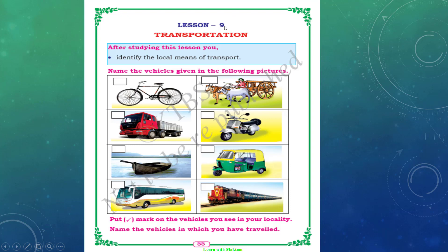Lesson number 9: Transportation. Name the vehicles given in the following pictures. I hope you know these vehicles — you have to name them and put a right mark on the vehicles you see in your locality. Also name the vehicles in which you have traveled. Among these, I hope you have traveled in all. The first one is a bicycle.